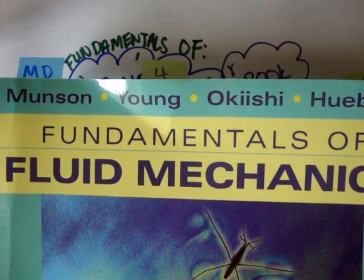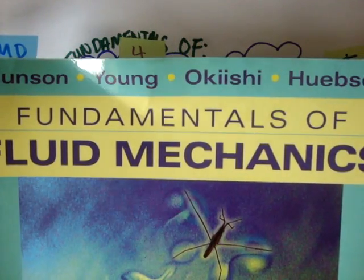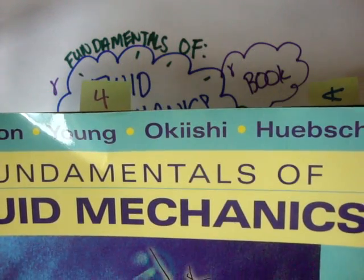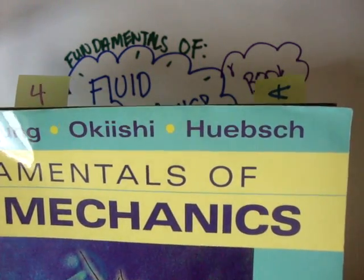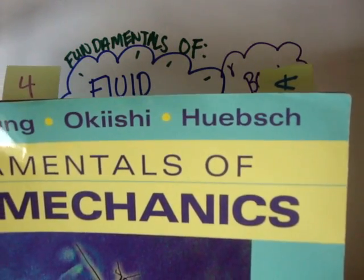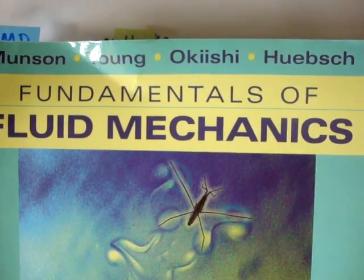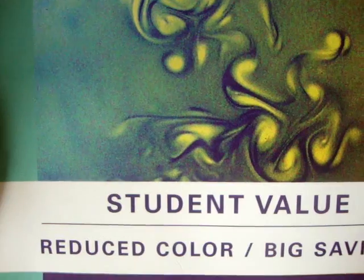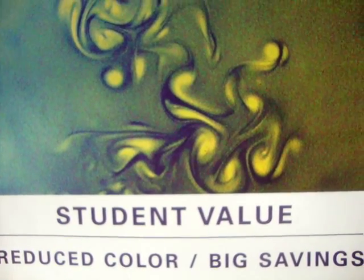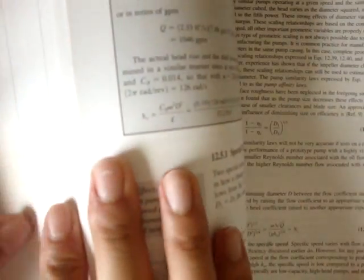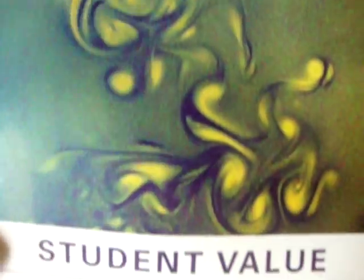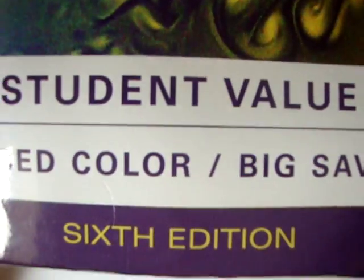So the book I'll be using is The Fundamentals of Fluid Mechanics by the authors Munson, Young, Okishi, and I don't know how to pronounce that. H-U-E-B-S-C-H. Fundamentals of Fluid Mechanics. Here's the cover. And I do have the student value edition. Not a big deal. All it is, is instead of having color, it's just black and white, which is fine. It just saves on ink. It saves me some money. And it is the sixth edition.